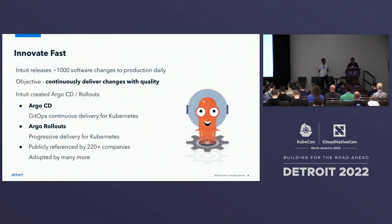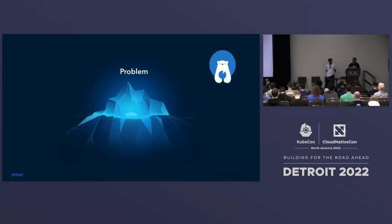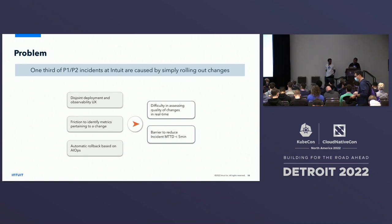One of the core principles at Intuit is innovation — we want to make sure we innovate and we innovate fast. We do over 1,000 releases per day in production, and that's only possible because of the investment we made in Argo. Intuit created Argo and open sourced it, and over 100 companies now use it across the world. Being one of the largest SaaS companies, operational excellence is always at the forefront for Intuit. We want to make sure our products are always available, and if there are issues, we resolve them fast, reducing MTTD and MTTR for our incidents.